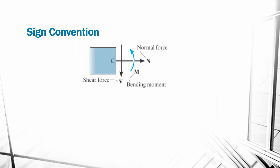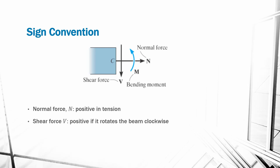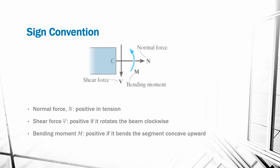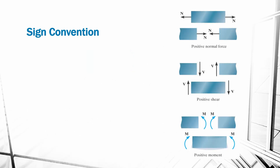Notice that depending on which side of the section you use, left or right, the direction of the arrows will be different. Therefore, it's important to establish a sign convention in order to understand how our internal forces are affecting our members. Our normal force will be positive if the element is in tension, like in the image, or negative if the element is in compression. Our shear force will be positive if it rotates our element clockwise. Our bending moment will be positive if it bends the segment concave upward. Notice that if we were to study the section on the other side, the internal forces would have different directions of the arrows.